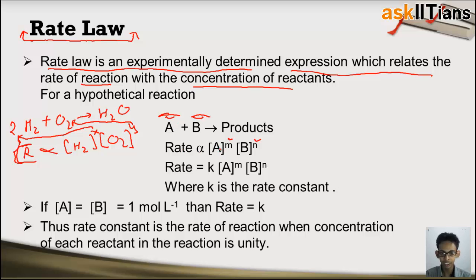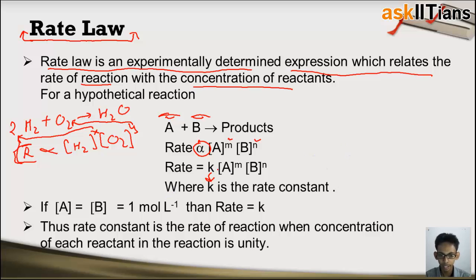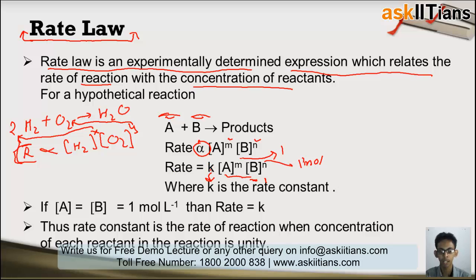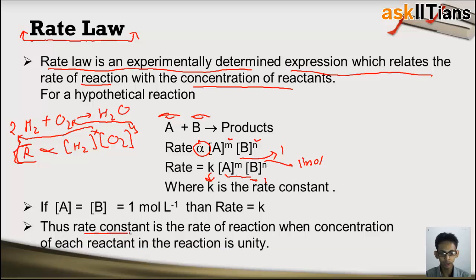Rate of reaction depends on the concentration of reactants A and B raised to some power. To eliminate the proportionality sign, we introduce a constant K, known as the rate constant. If the concentration of A becomes 1 mole per liter and that of B also becomes 1 mole per liter — that is, concentrations of both reactants are unity — then the rate of reaction becomes equal to K. So the rate constant is the rate of reaction when the concentration of each reactant is unity.